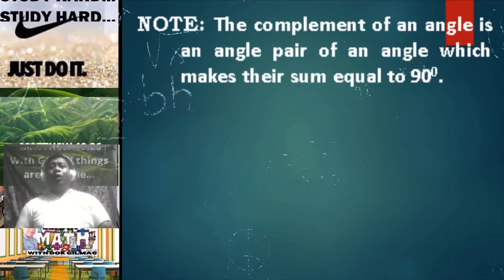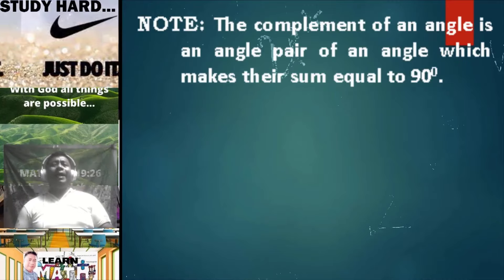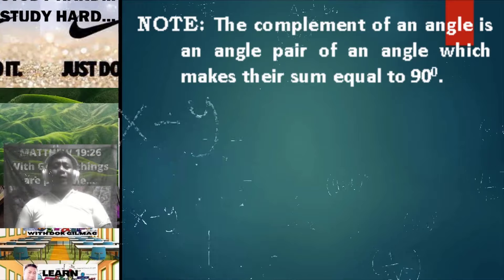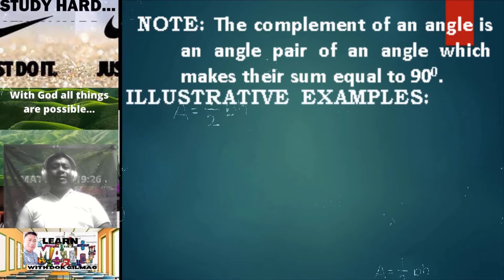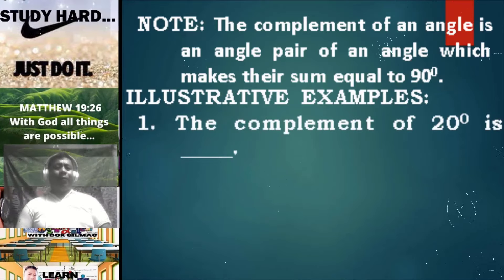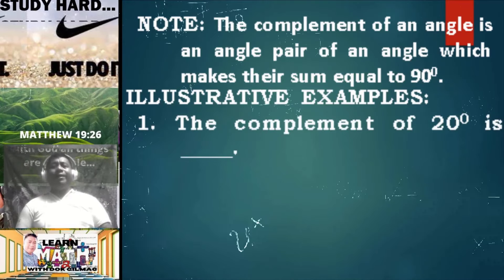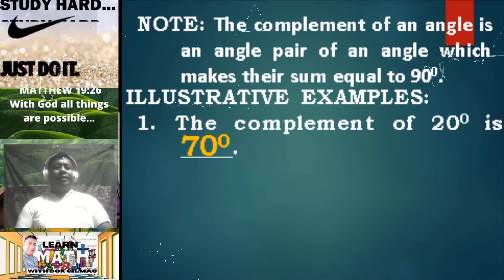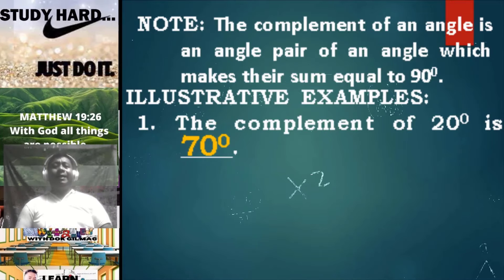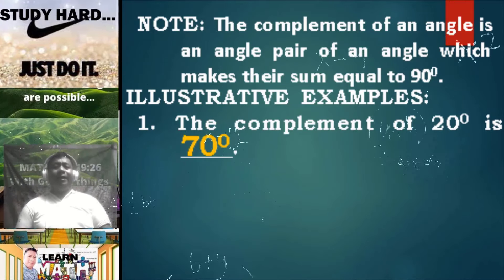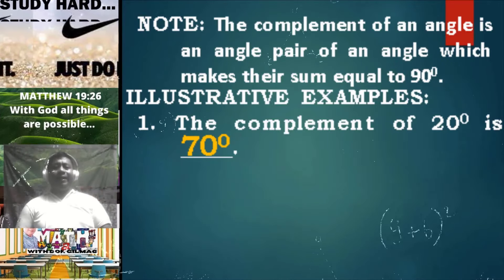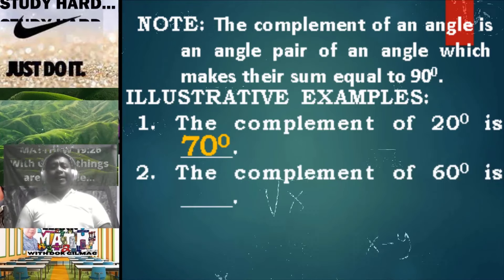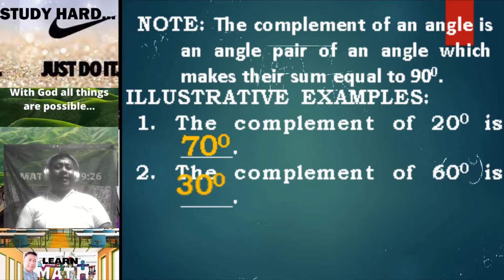Take note: the complement of an angle is an angle pair of an angle which makes their sum equal to 90 degrees. Consider illustrative examples. Number one, the complement of 20 degrees is 70 degrees, since 20 degrees plus 70 degrees is equal to 90 degrees. Number two, the complement of 60 degrees is 30 degrees.